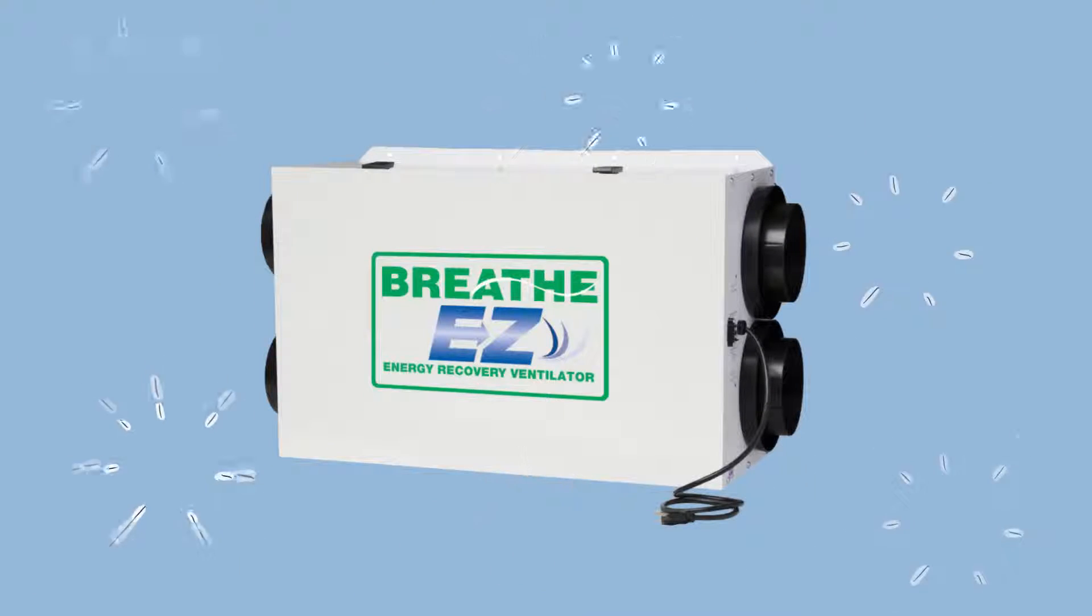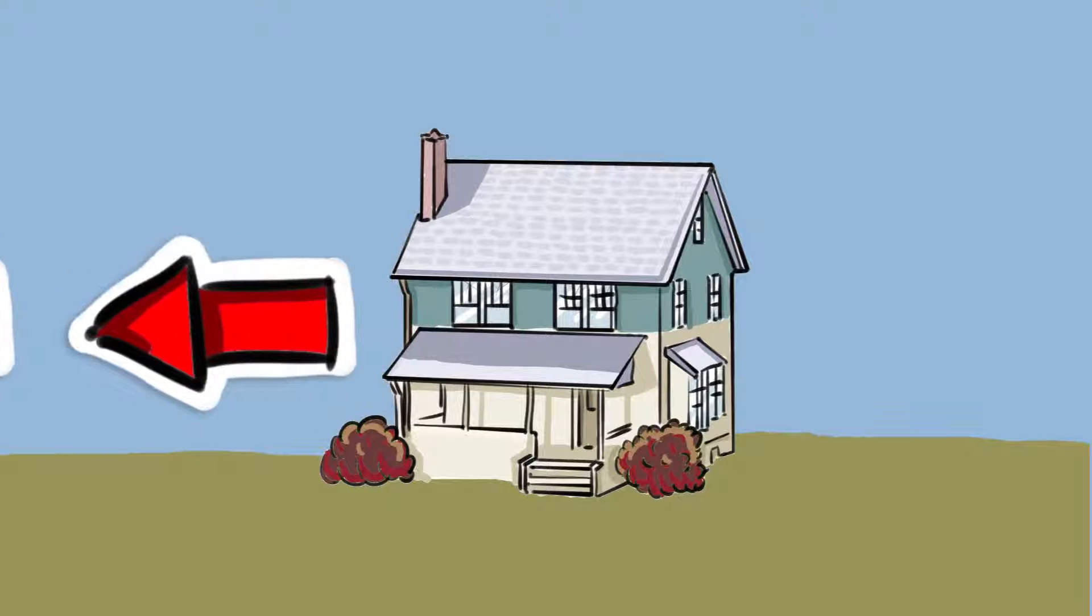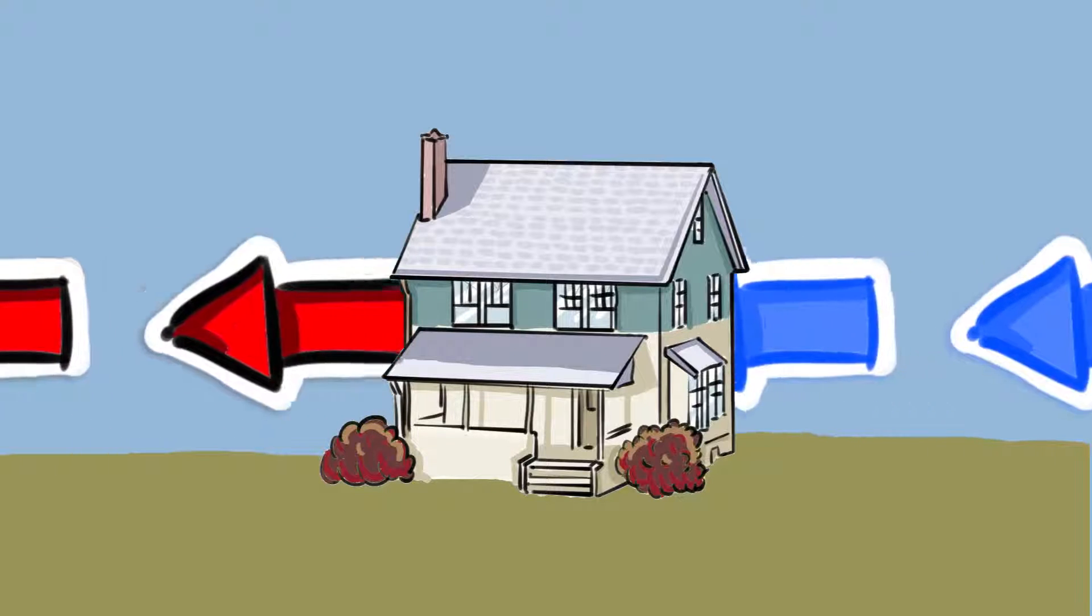The Breathe Easy Energy Recovery Ventilator, or ERV. This increasingly popular system can easily remove poor indoor air while effectively injecting clean, fresh air into your home. Here's how it works.